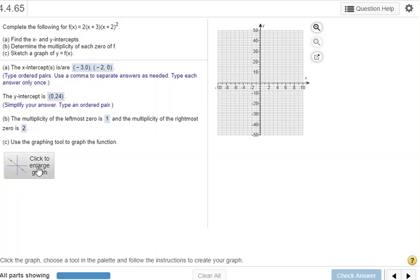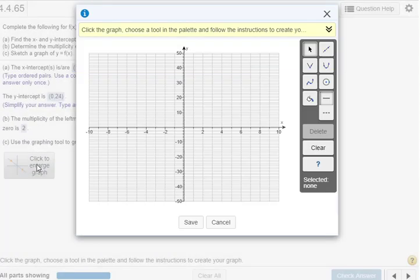Now we're ready to do the graph. We'll click to enlarge the graph. That's the best thing to do, and we said it was a cubic function, not a parabola, so we're going to click this, and note that it says it's a 4-point tool.